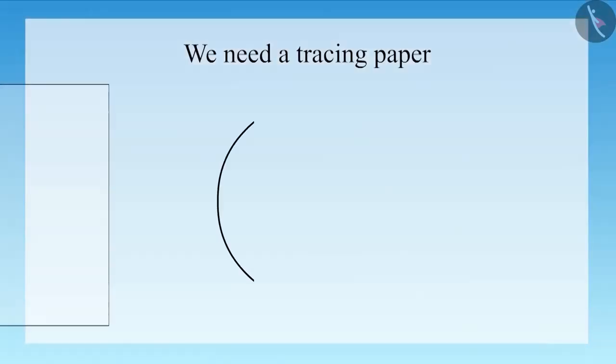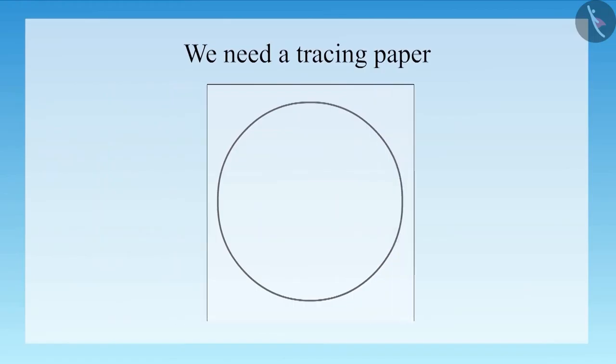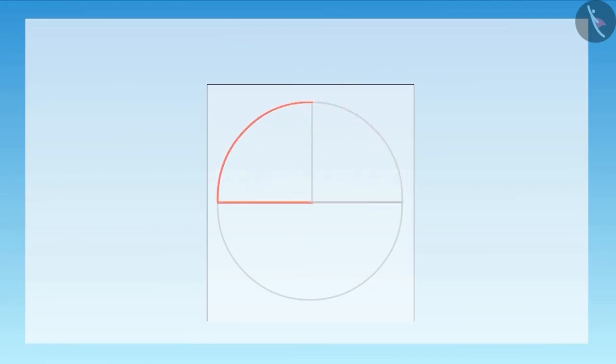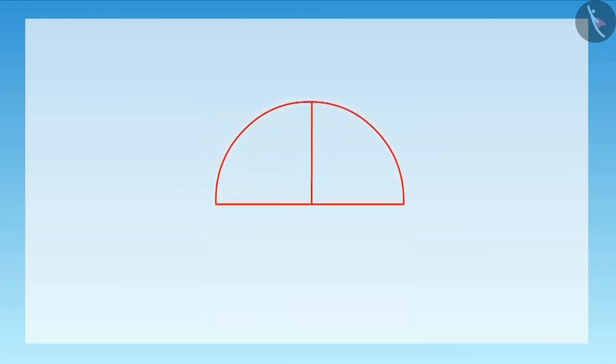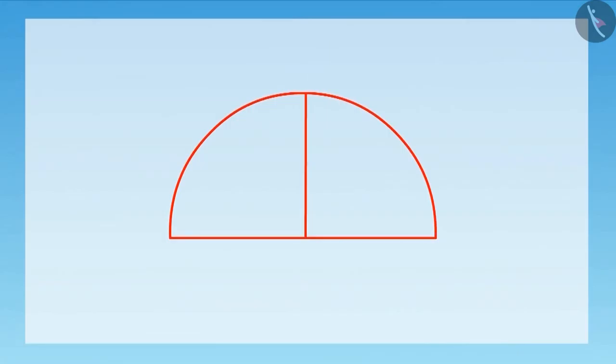First, take a tracing paper through which we can see across easily. Now, make a semicircle, that is half circle, on that paper. Divide that semicircle into two equal parts. You can see that 90 degree and 0 degree angles are being formed here.